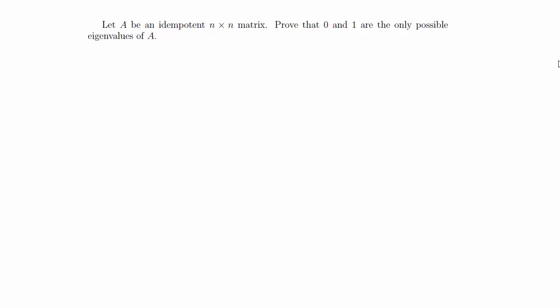Hey guys, in this video I'm going to do another proof problem that you would see in a linear algebra class. This particular problem says, let A be an idempotent n by n matrix. Prove that 0 and 1 are the only possible eigenvalues of A.